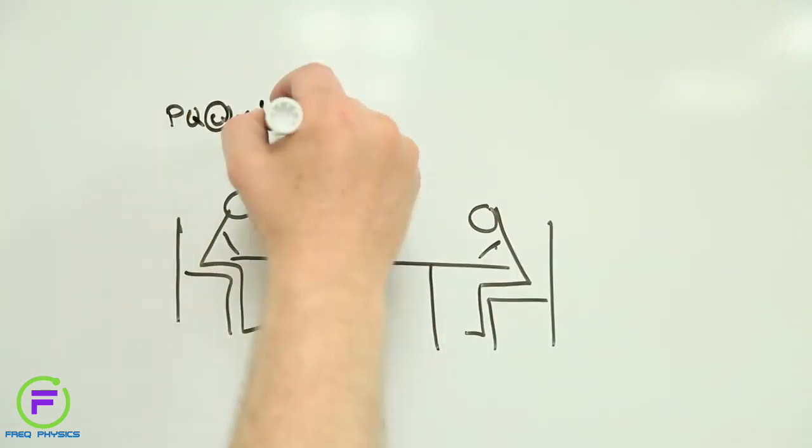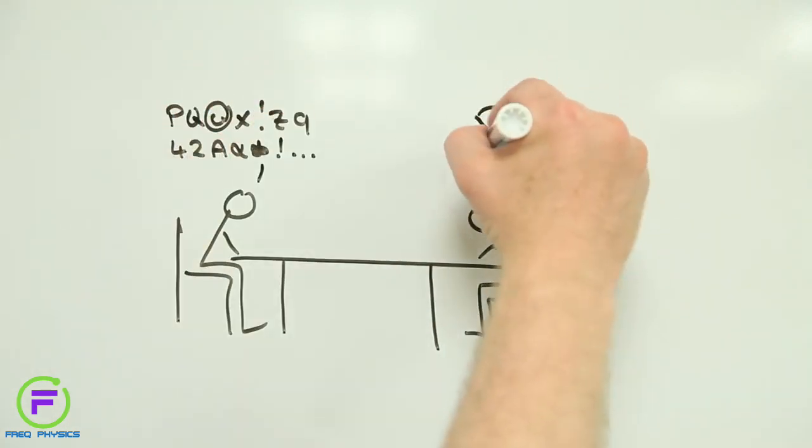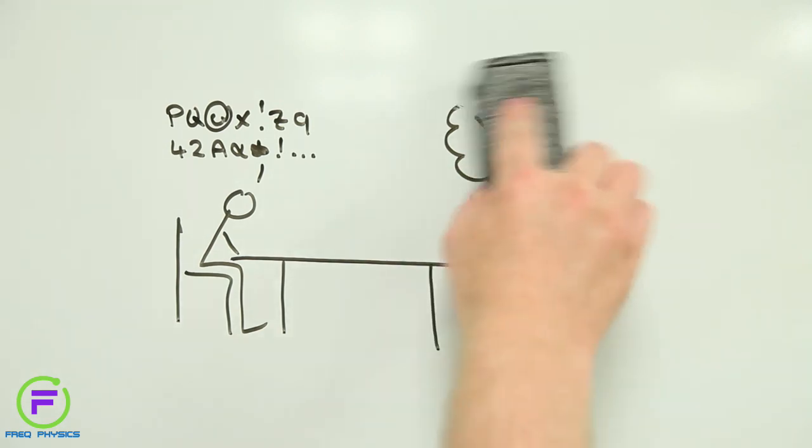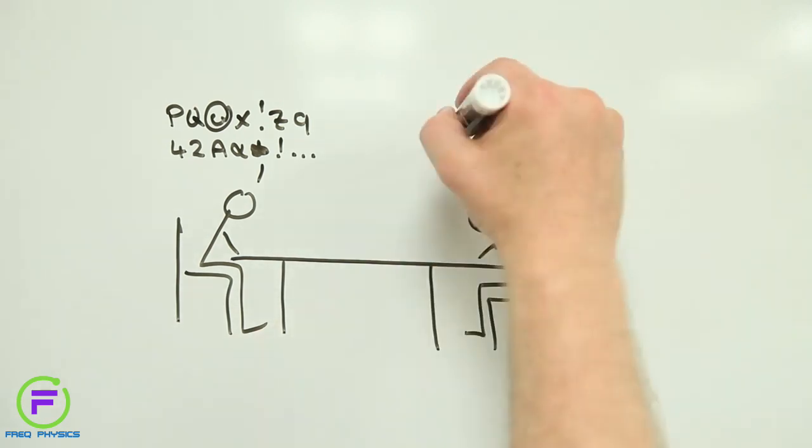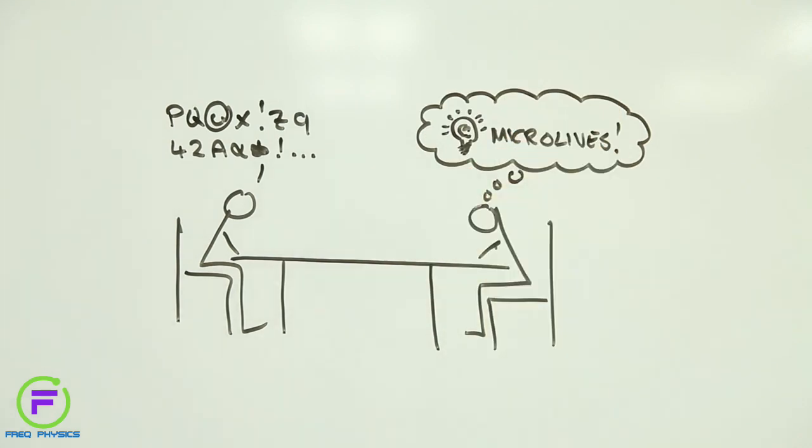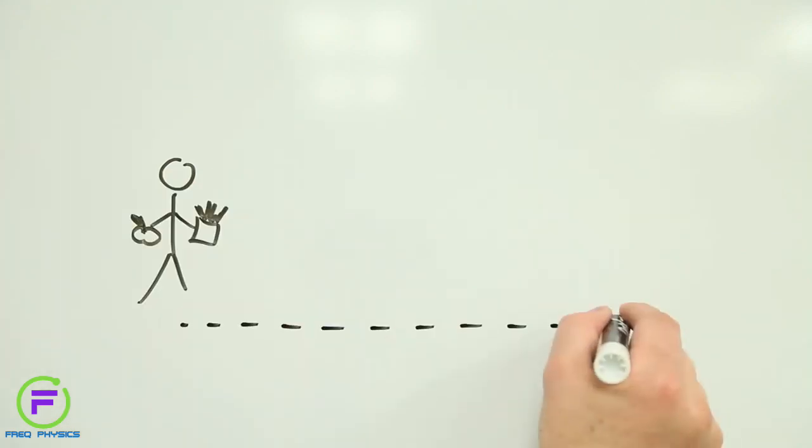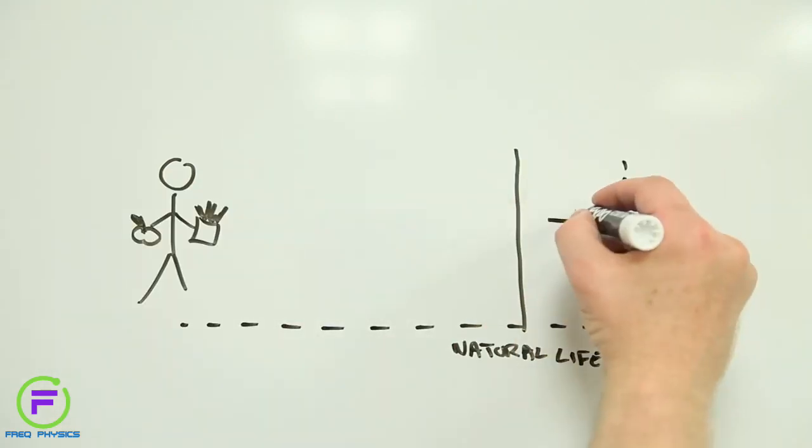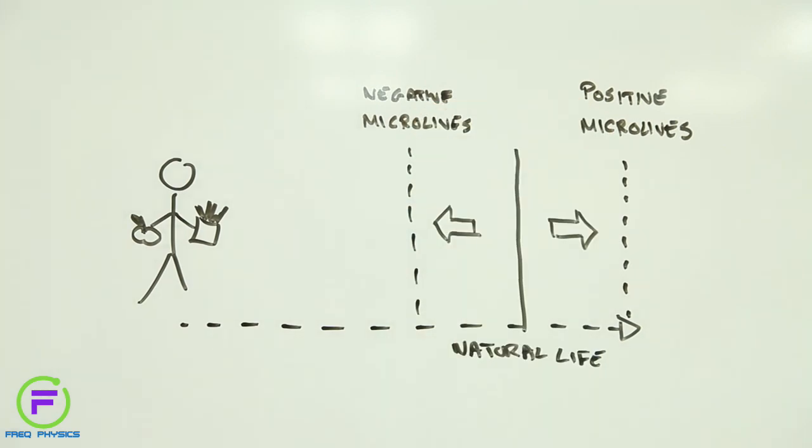To help make sense of these long-term risks, University of Cambridge professor David Spiegelhalter recently came up with the Microlife as a way of estimating how what you do now might affect how long you live in the future. A Microlife is the probability of something you do increasing or decreasing your expected adult lifespan by 30 minutes.